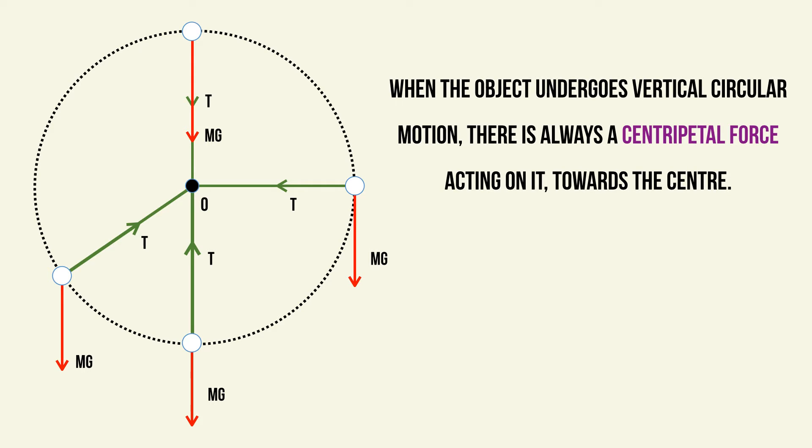We know that when an object undergoes circular motion — any kind of horizontal or vertical circular motion — there must always be a centripetal force acting on it, and it will always act towards the center, at 90 degrees to the tangential velocity. The centripetal force in horizontal circular motion will always be at a constant angle from the line of action of the weight, and the same applies to the tension force.